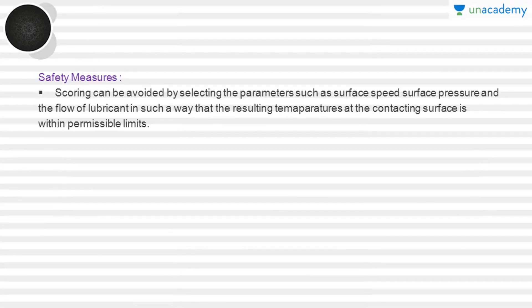Scoring can be avoided by selecting parameters such as surface speed, pressure, and lubricant flow in such a way that the resulting temperature at the contacting surface remains within permissible limits. When temperature is within permissible limits, there is no chance of overheating or scoring. These are the different types of bearing failures and the safety measures to keep bearings safe from them.